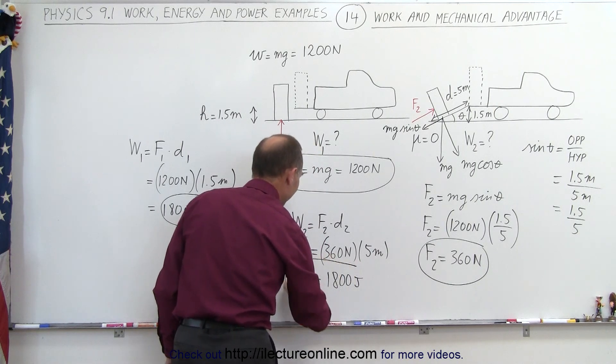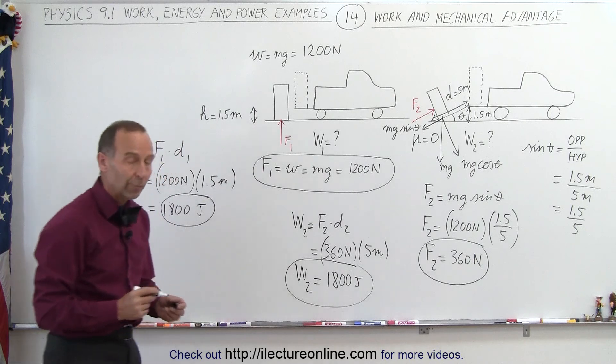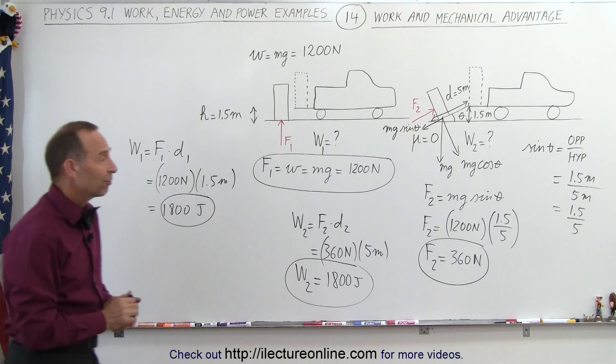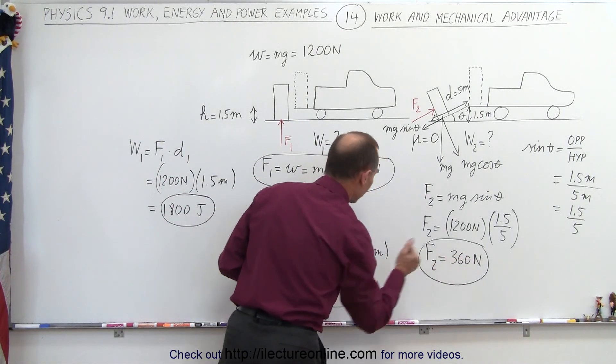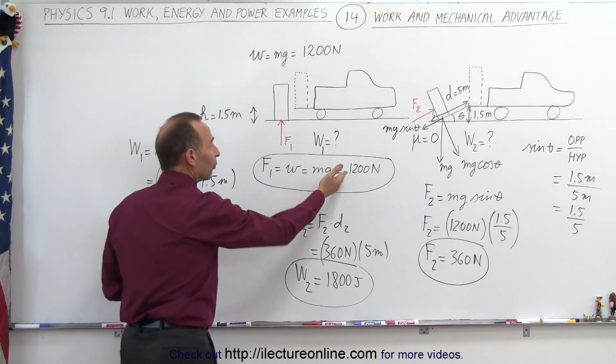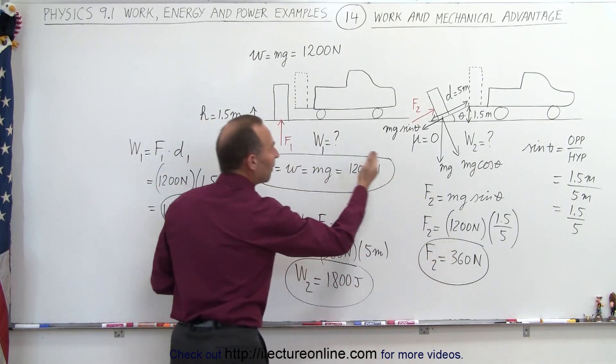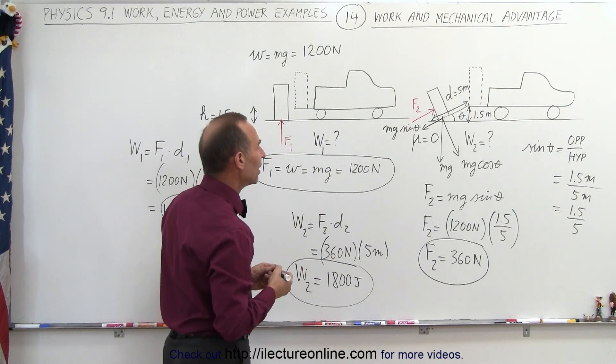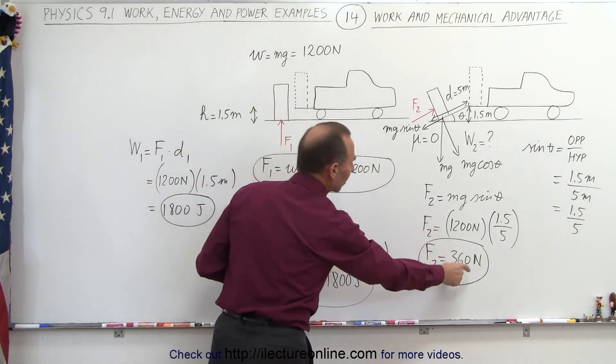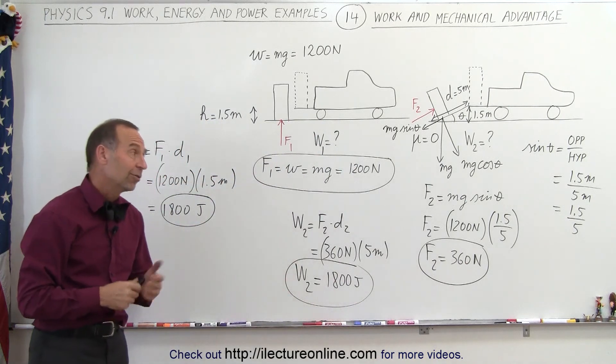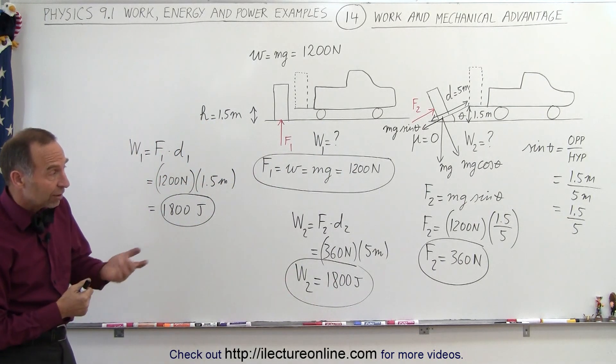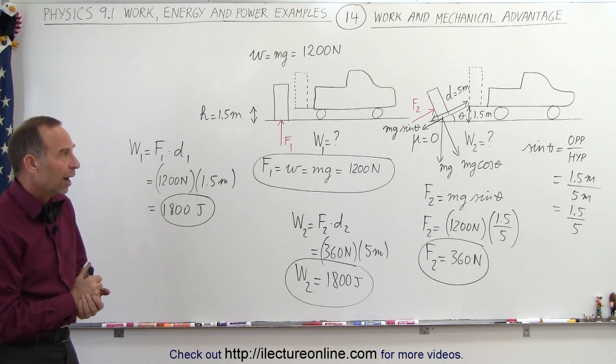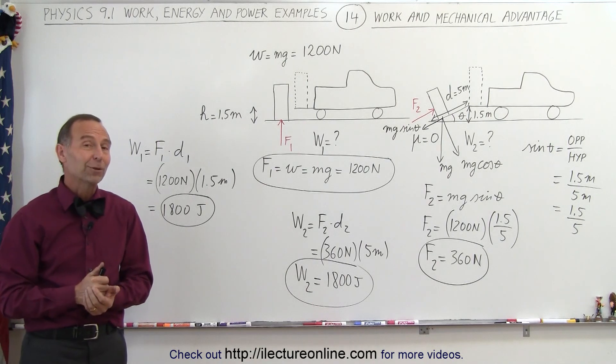So you can see that it takes the exact same amount of work to push that refrigerator up the ramp as it does to lift it straight up. The difference is you only have to apply a much smaller force to push it up the incline versus a much greater force to lift it straight up. And this is what they call a mechanical advantage. So if we want to look at that ratio, the mechanical advantage, it's a 1200 to 360 ratio of mechanical advantage. It's a little bit more than three times as easy to push the refrigerator up the incline. So that's the way I would do it.